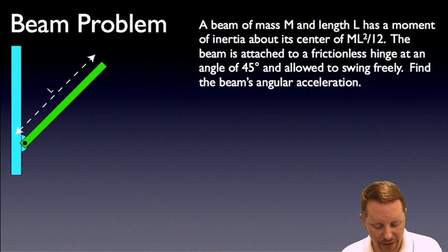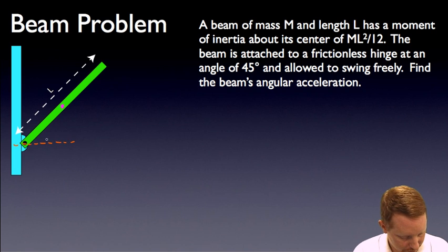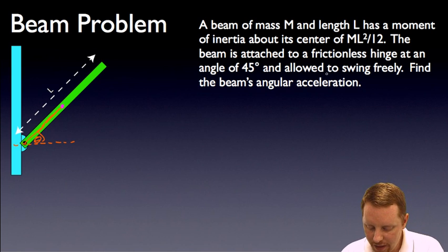Let's get into something a little bit heavier. Let's talk about the standard beam problem. We have a beam of mass m and length L, and it has a moment of inertia about its center of one-twelfth mL squared, again note that's right around its center point there. The beam is attached to a frictionless hinge at an angle of 45 degrees, there's our angle theta, 45 degrees, our lever arm there, and it's allowed to swing freely. Find the beam's angular acceleration.